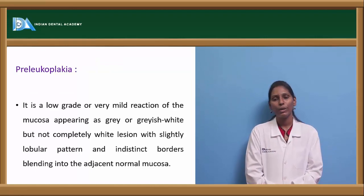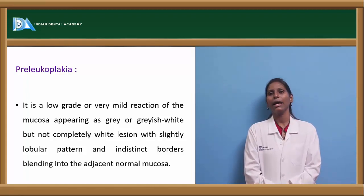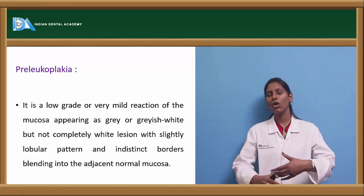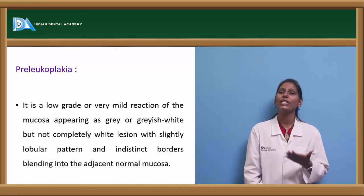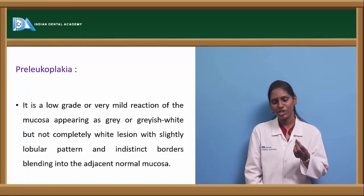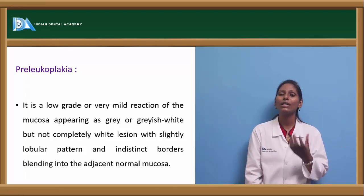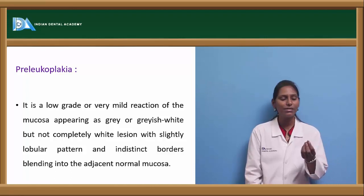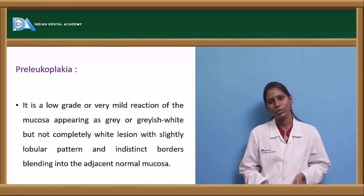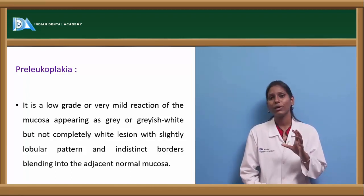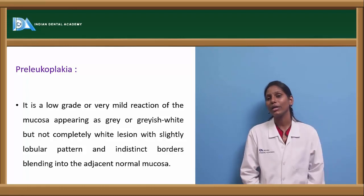Proliferative verrucous leukoplakia is also called Ackerman's keratosis, or Ackerman's disease, or snuff dipper's disease. We also have a condition called pre-leukoplakia — before all the histopathological features show it as true leukoplakia. Pre-leukoplakia is actually a low-grade or very mild reaction of the mucosa to any stimulus. Here the mucosa usually appears gray or grayish-white — not a completely white lesion — with a slightly lobular pattern. The borders here are indistinct and they blend into adjacent mucosa. Whereas in true leukoplakia, the borders are well defined, and you can see a clear-cut white lesion nicely delineated from adjacent mucosa.